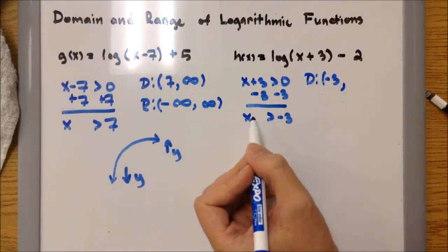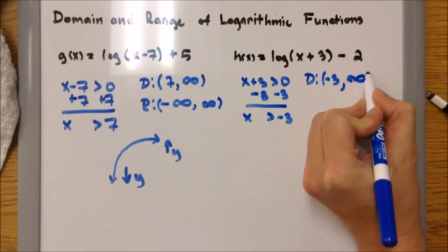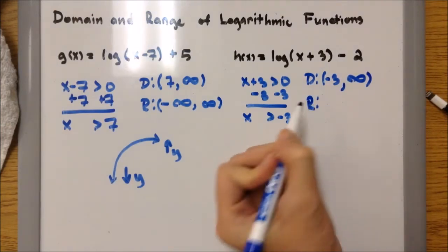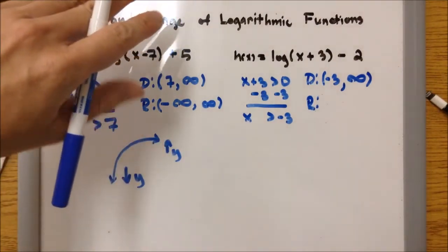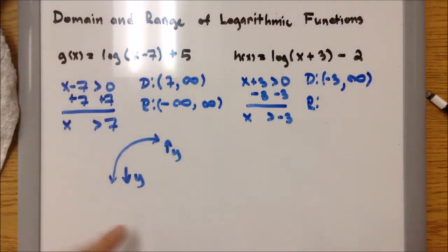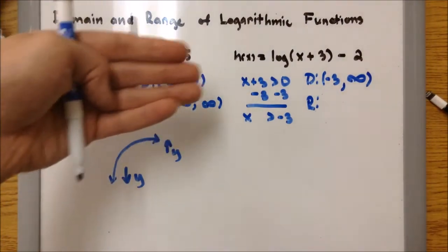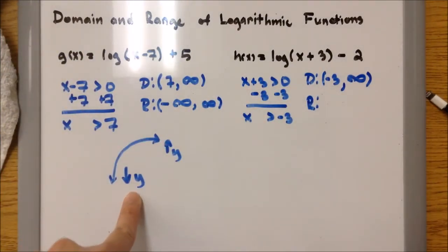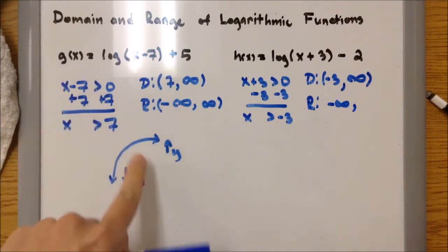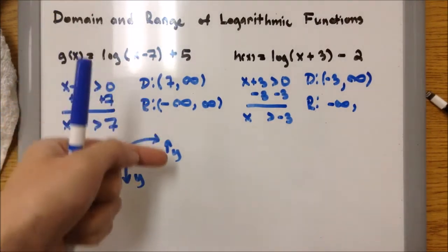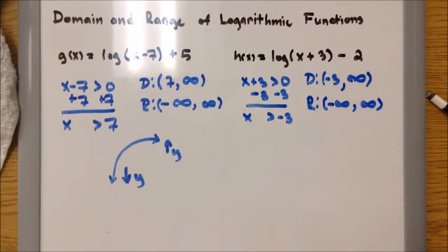X has to be greater than negative 3, so negative 2, negative 1, 0, 1, 2, 3, and so on — going towards positive infinity. There's our domain. For the range, it's pretty much the same graph. Regardless of whether it's plus 5 or minus 2, regardless if it shifts up or down, it's still going to be continuous on both the bottom and top halves. So the bottom is negative infinity and the top is positive infinity. That is our domain and range for example 2.